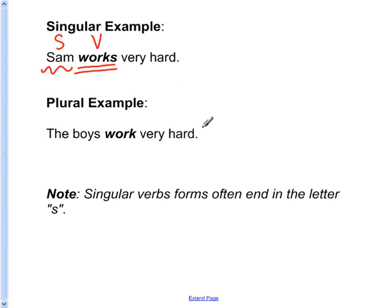Let's look at a plural example: The boys work very hard. The main verb in this sentence is work. The subject is boys. In this case, the subject boys is plural. The form of the verb to work that agrees with the plural subject is work.